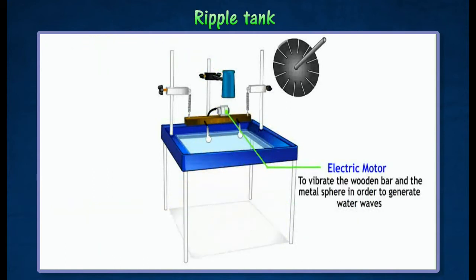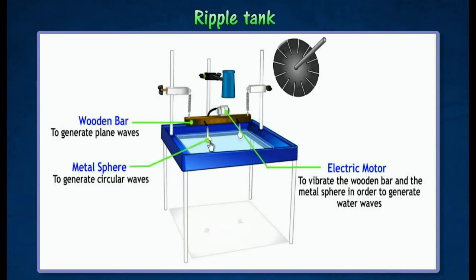Electric motor is used to vibrate the wooden bar and the middle sphere in order to generate water waves. Wooden bar is used to generate plane waves, while the middle sphere is used to generate circular waves.